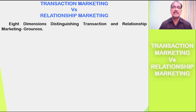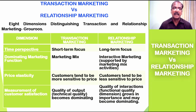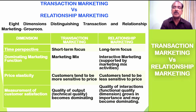There are eight dimensions that distinguish transaction and relationship marketing according to Grönroos. The first dimension is time perspective. With regard to transaction marketing, it is short-term focused. Once the transaction is over between the seller and buyer, it comes to an end — there is no need for any follow-up, because when the transaction is over, the entire job between the two parties comes to an end.